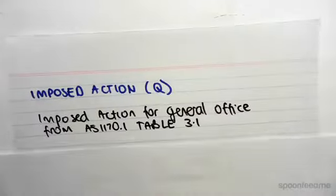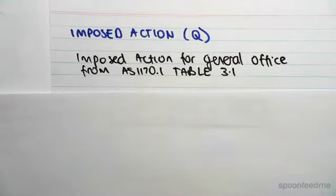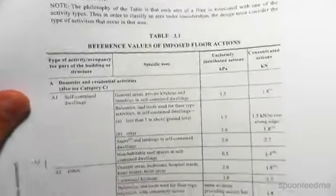We can then work out the imposed action. So we go to table 3.1, AS 1170.1, so that's on page number 9, and we look for this is just a general office.